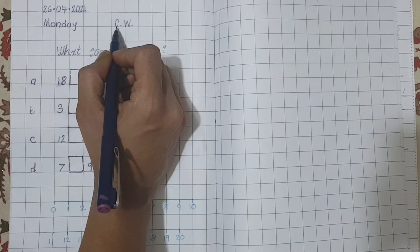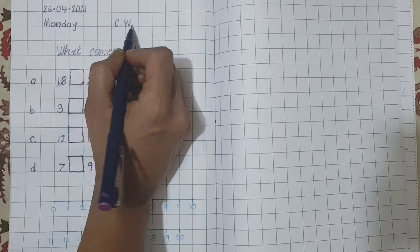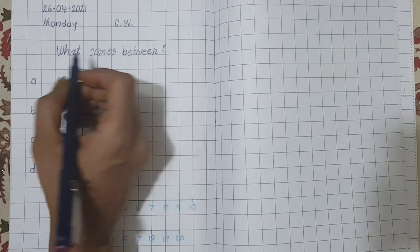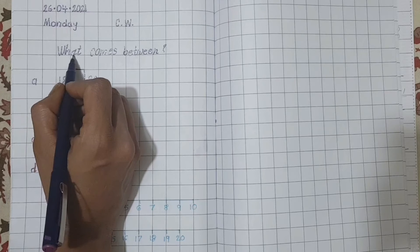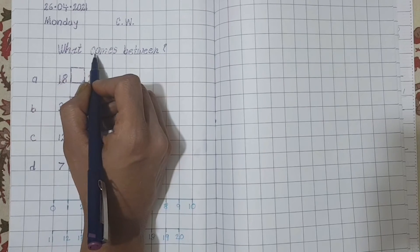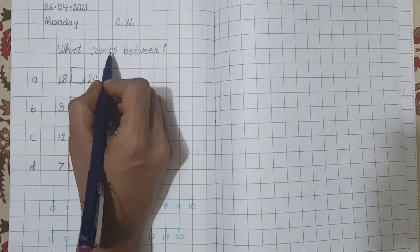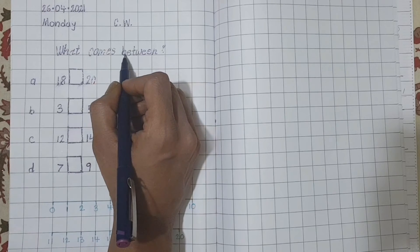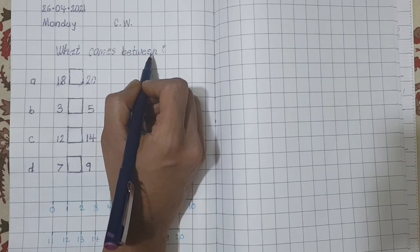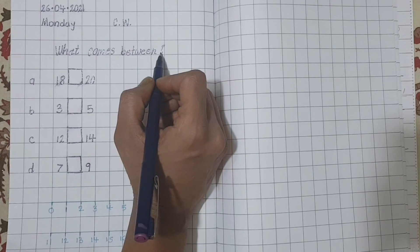Then write down C dot W dot. Then we will give heading. W-H-A-T what? C-O-M-E-S comes? B-E-T-W-E-E-N between? And question mark.